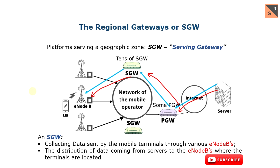That seems slightly more complex, but the advantage is that when the terminal moves, very often it remains under the same S-Gateway, and it is only the S-Gateway that has to manage this mobility. So the S-Gateway enables not only the collection of data sent by the mobile terminals to various eNBs, but also the distribution of data coming from the internet to the eNB where the terminal is, as represented here.